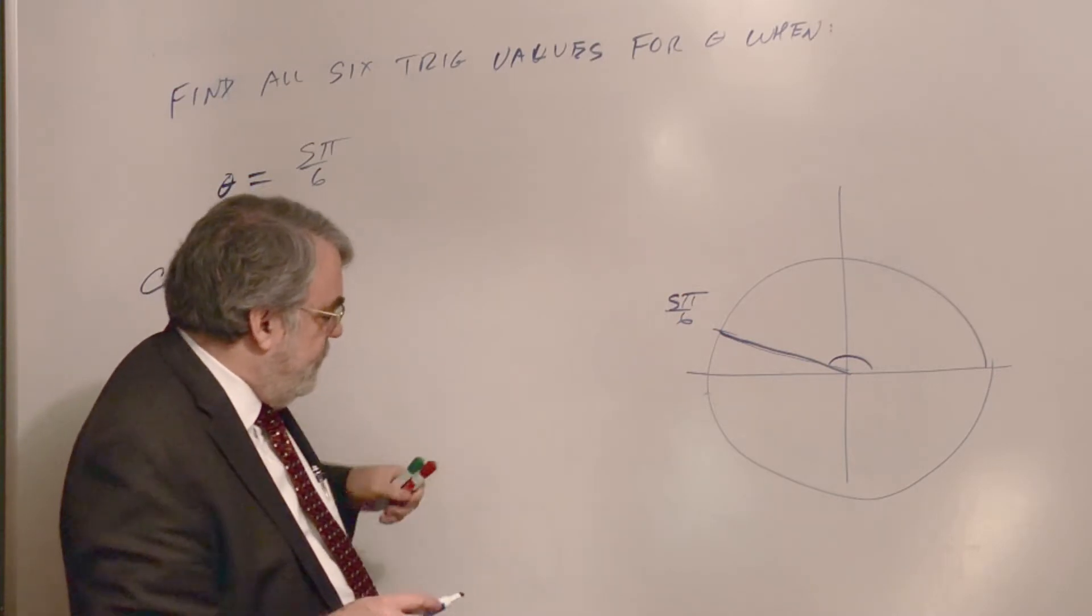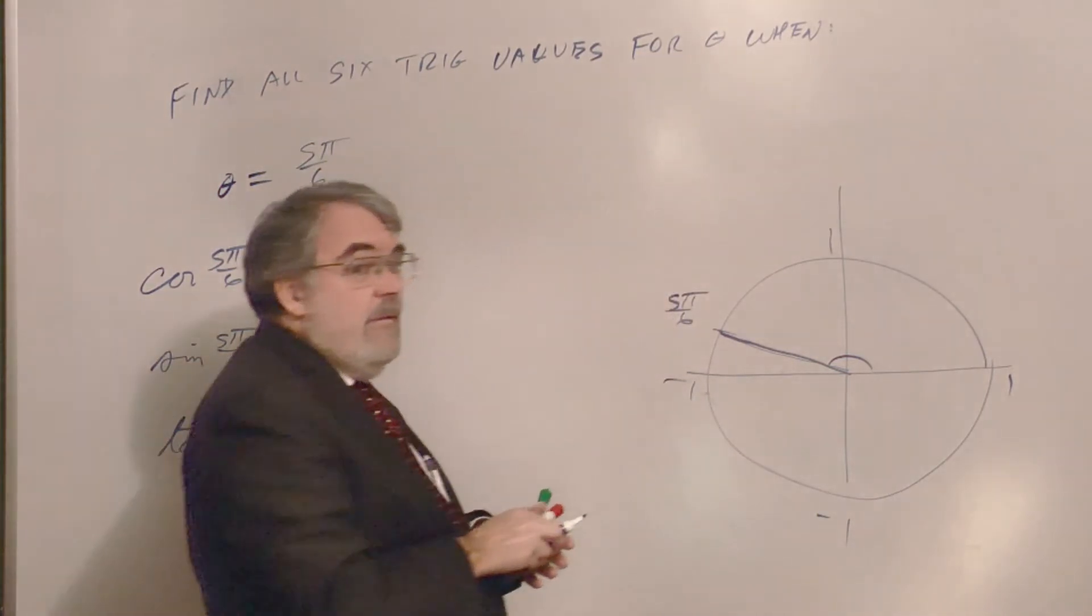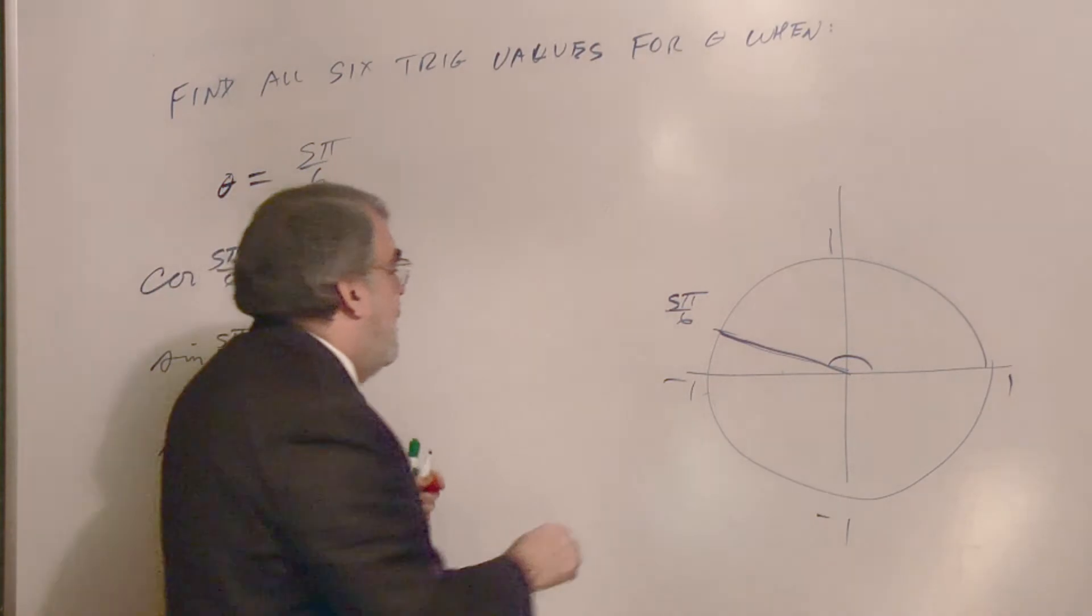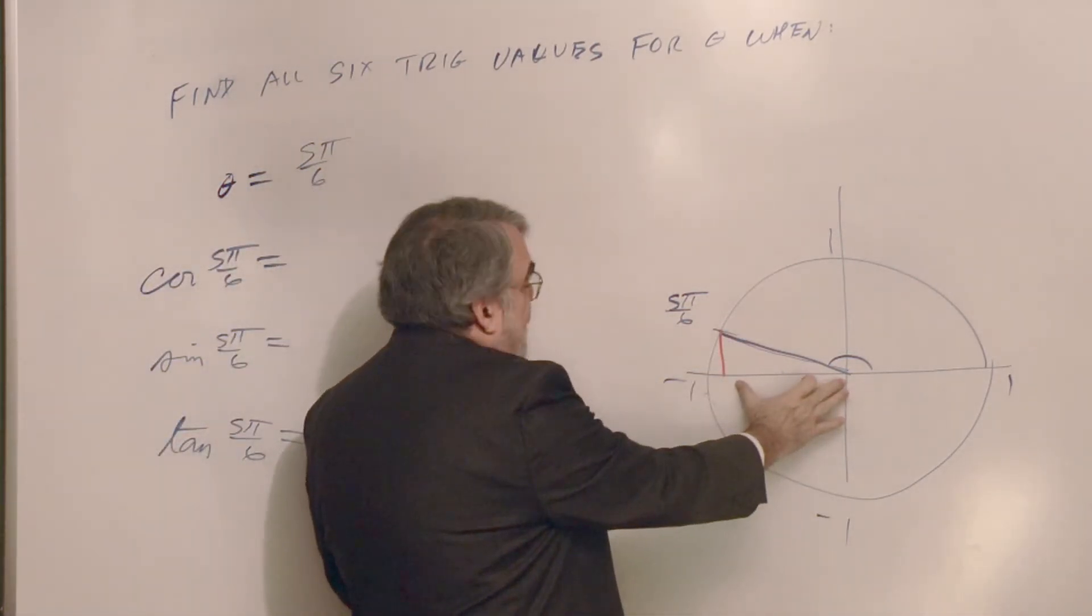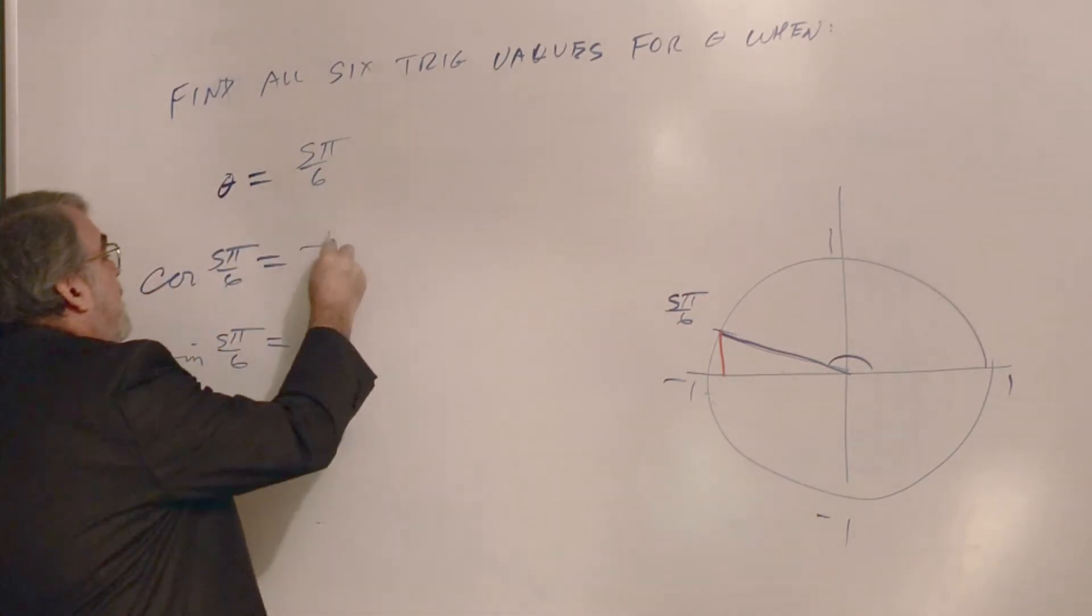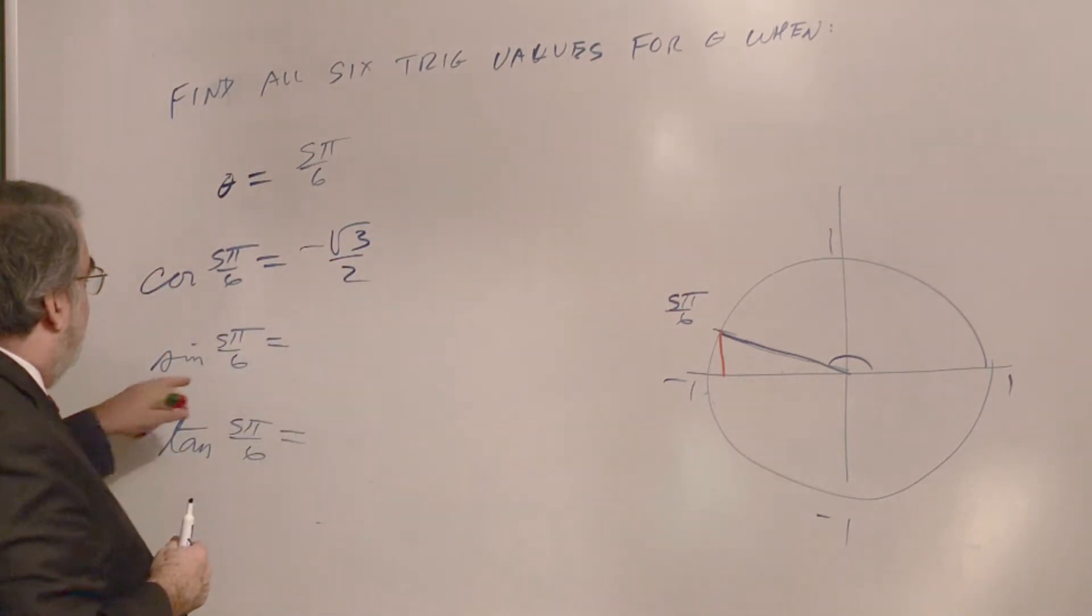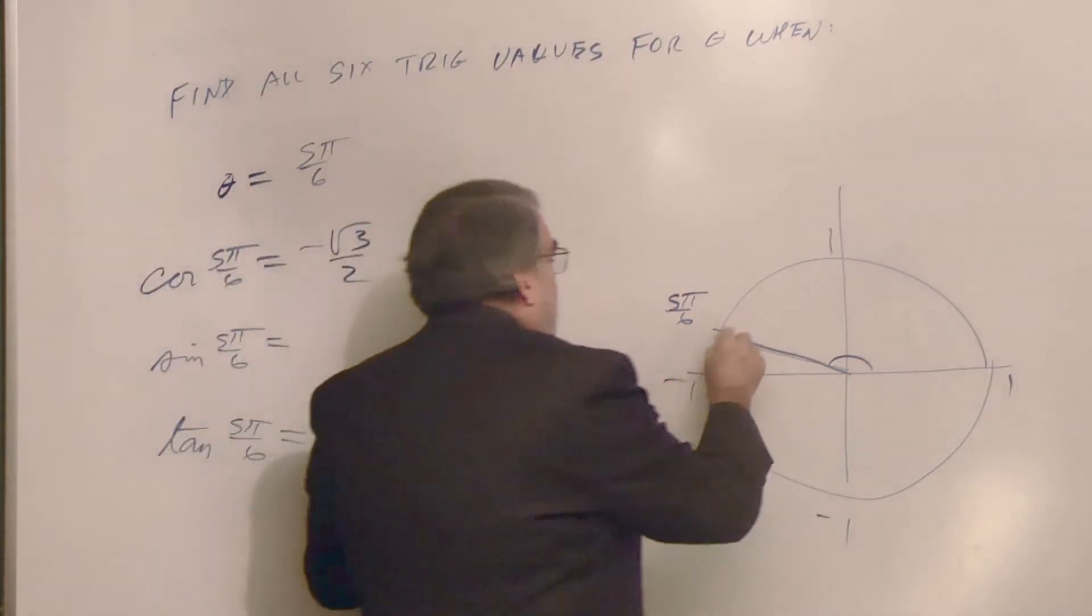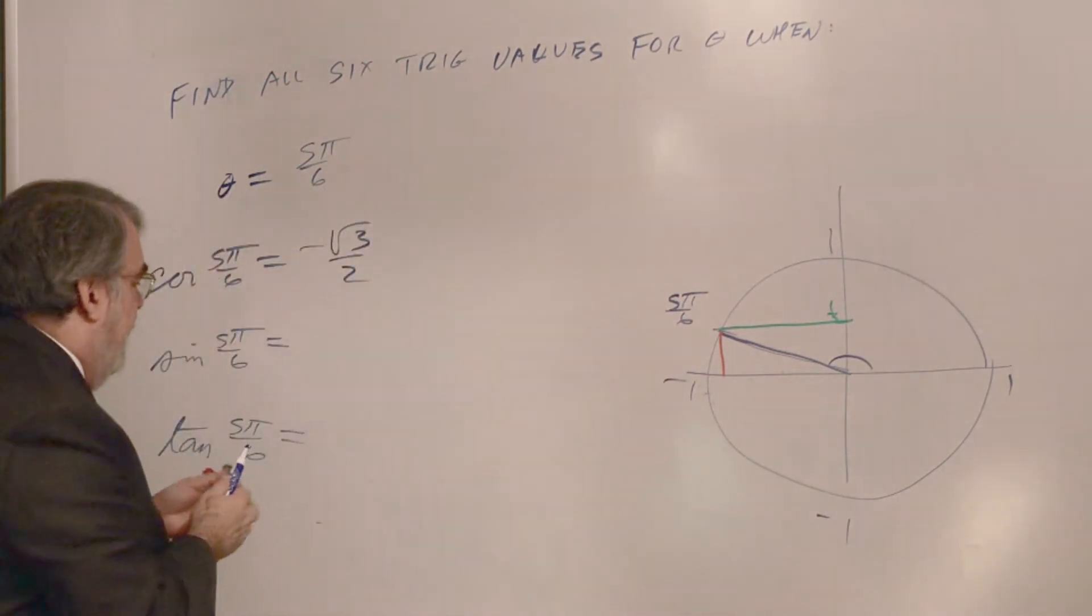So once again, we draw a little sketch on the unit circle. There's my 5π over 6. That's my angle of theta. You know, this is minus 1, 1, 1, minus 1. So what's the cosine? Cosine is x value. So if I drop down to here, that's almost negative 1, isn't it? So the cosine is going to be minus square root of 3 over 2. How about sine of 5π over 6? That's the y value. Looks like 1 half, doesn't it? And it is 1 half.